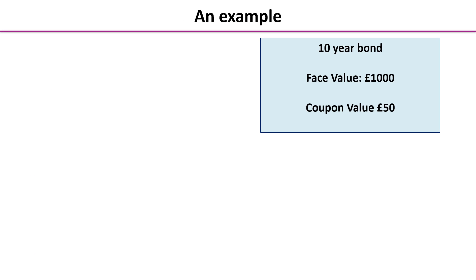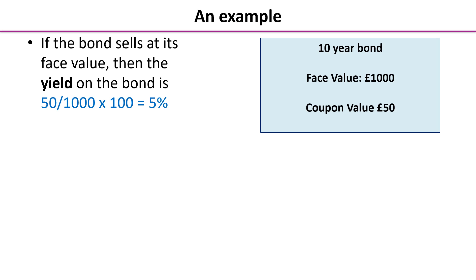Let's look at an example. We've got a 10-year bond with a face value of £1,000 — that's how much it was sold for by the government on the primary market. The coupon value is £50, so the owner of that bond will receive £50 each year for the 10 years. At the end of the 10 years the government pays the owner the face value, £1,000, back again. If the bond sells at its face value, the yield is £50 divided by £1,000 times 100, which gives you 5%.